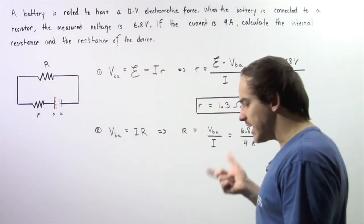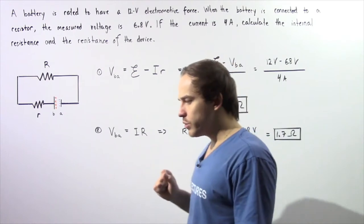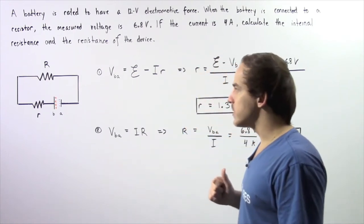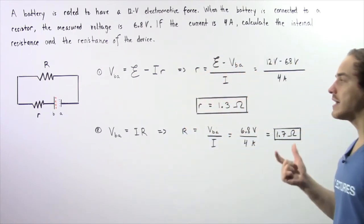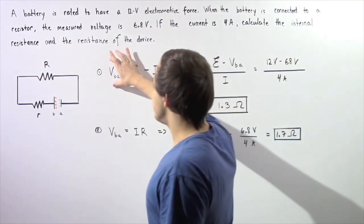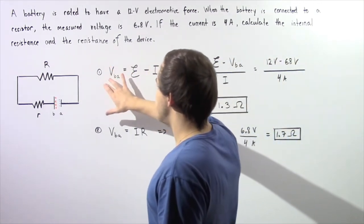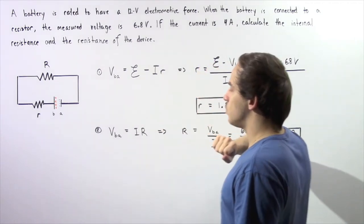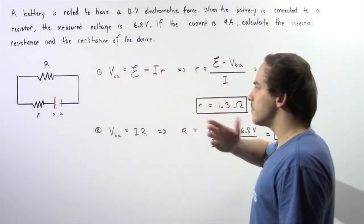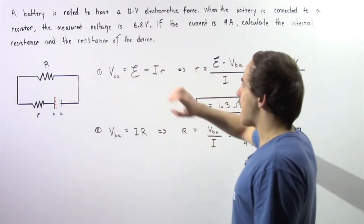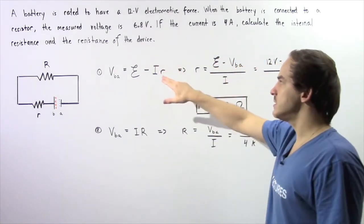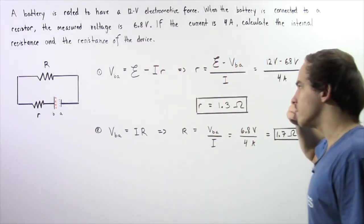Let's recall the relationship between the terminal voltage that exists across a battery and the electromotive force. The terminal voltage given by V_BA is equal to the electromotive force minus the product of our electric current I and the internal resistance given by lowercase r.